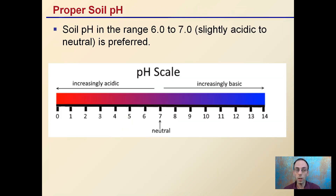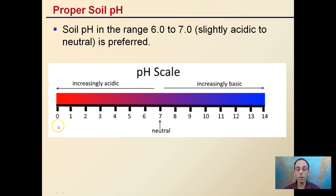Then we have proper soil pH. Soil pH in the range of 6 to 7, favoring slightly acidic to neutral, is preferred. This is speaking for most plants. There are a couple of exceptions — for example, blueberries prefer a much more acidic range, and asparagus can tolerate soils above pH 7. But typically, right around neutral, most nutrients are available to plants, so that's where most plants prefer, between 6 and 7.